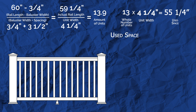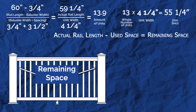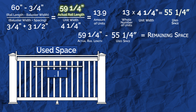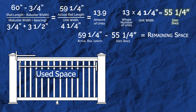Subtract your used space from the total rail length to find your remaining space. The remaining space is the distance between your two posts and the closest baluster to them. Our actual rail length is 59 and a quarter inches minus the used space of 55 and a quarter inches, which brings our remaining space to four inches.